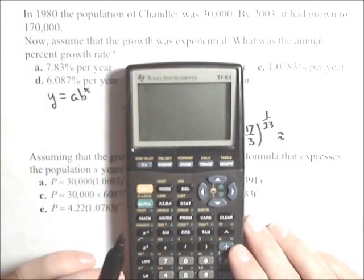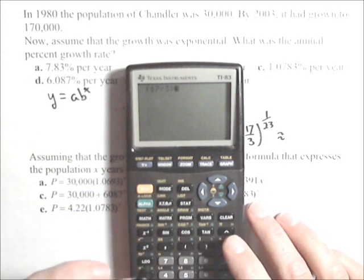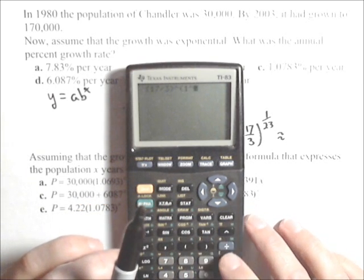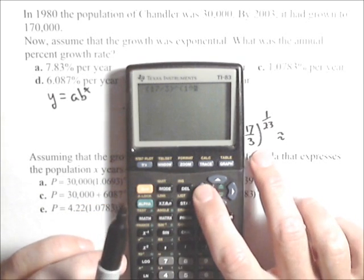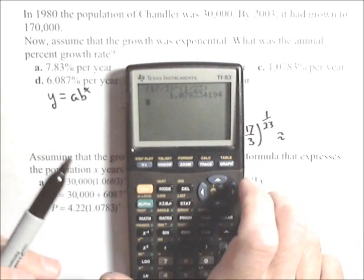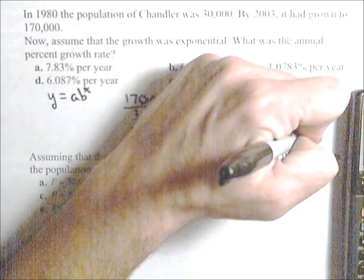Now let's calculate this. We need 17 divided by 3, and this is important: that 1/23 has to be in parentheses, otherwise this won't work. You also need to put in the division symbol correctly. The result is 1.07833.